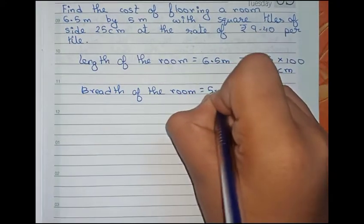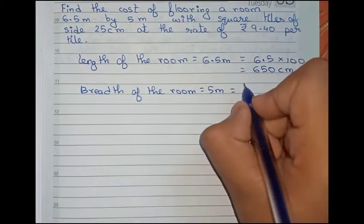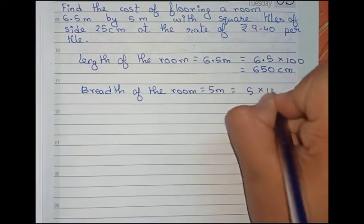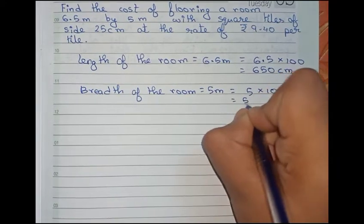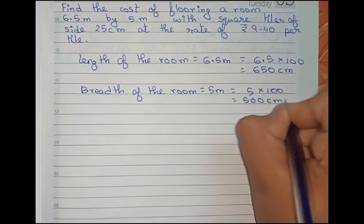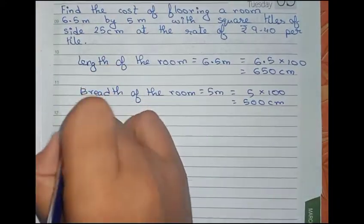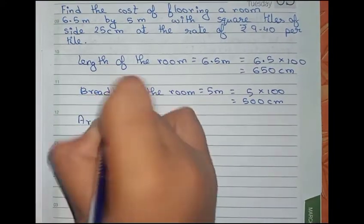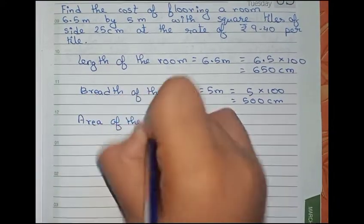Breadth of the room is 5 meters, so also convert it into centimeters. That is 5 into 100, which is 500 centimeters. Now find the area of the room.